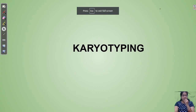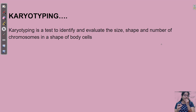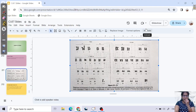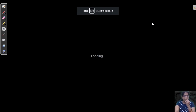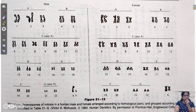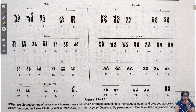Karyotyping is a test to identify and evaluate the size, shape, and number of chromosomes in a body cell. If you look in detail, these are the 23 types of chromosomes — these are all male chromosomes. They are arranged in decreasing order of length. That is how the karyotype is made.